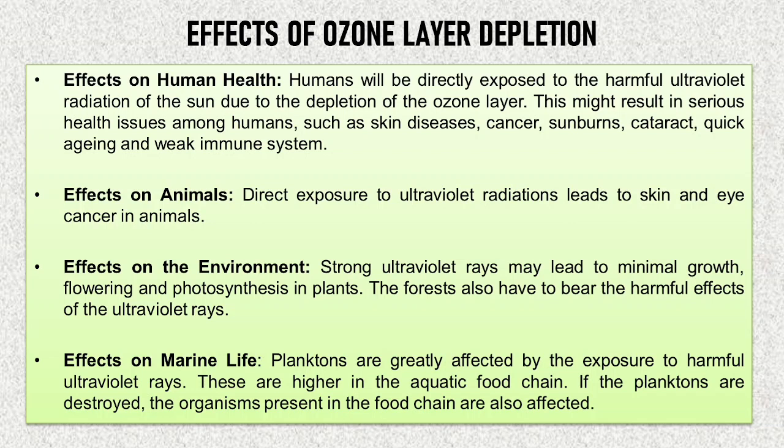The effect on animals: direct exposure to ultraviolet radiation leads to skin and eye cancer in animals. The effect on the environment includes minimal growth of flowering and photosynthetic plants, and forests also bear harmful effects of ultraviolet rays. Overall — humans, animals, environment, and forests — everywhere is being affected by UV radiation due to ozone layer depletion.